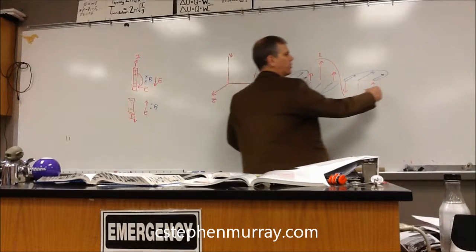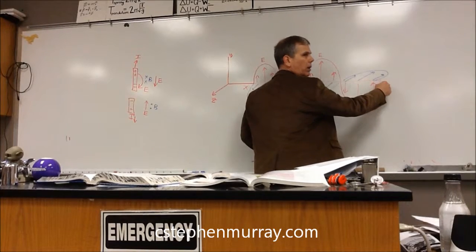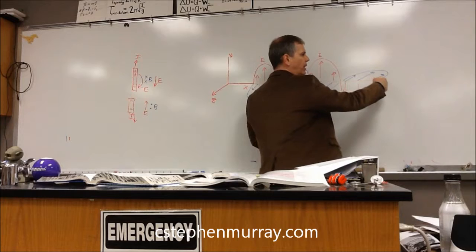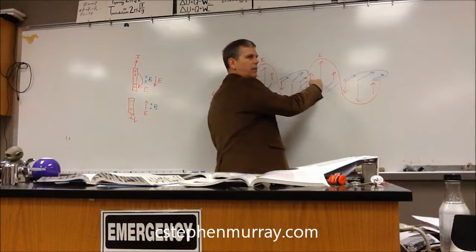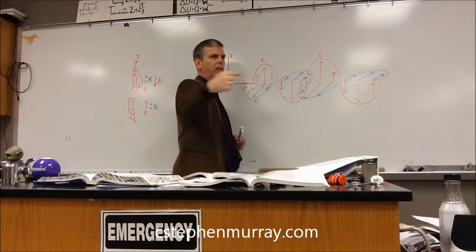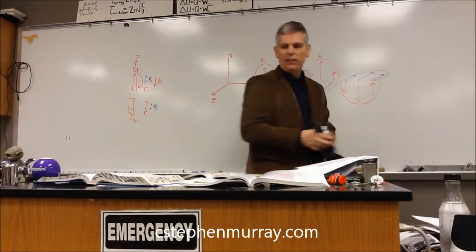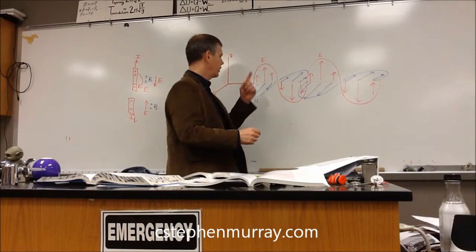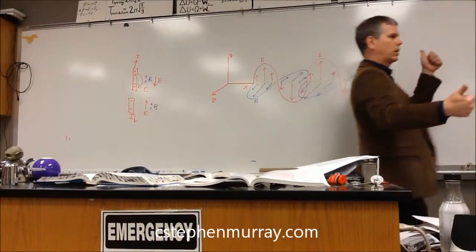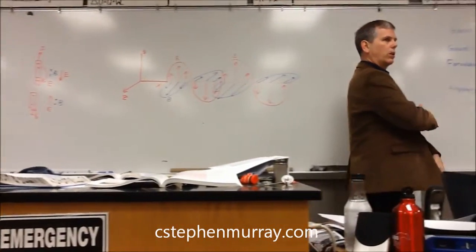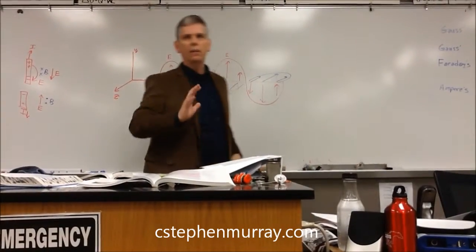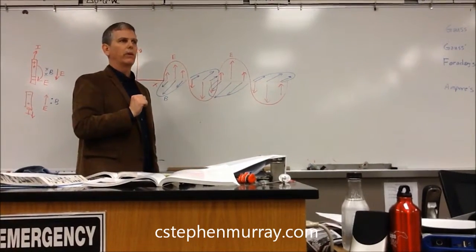So if we were to take a point in space right here as this wave moves past, notice the magnetic field is going to be going in, then the magnetic field is going to be coming out, then in, then out — the magnetic field will be doing this as it passes that point. At the same time, the electric field and the magnetic field are going to be alternating as it passes a point.